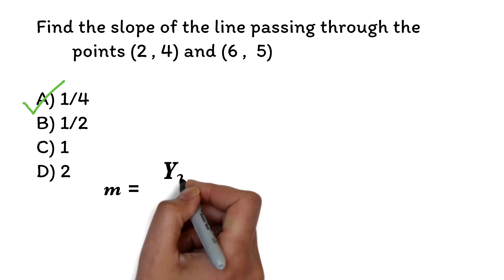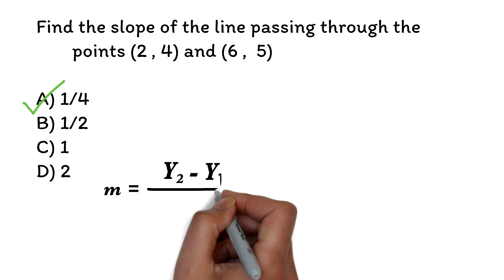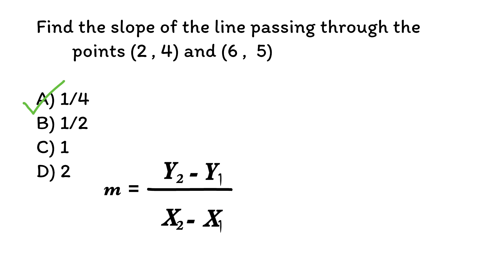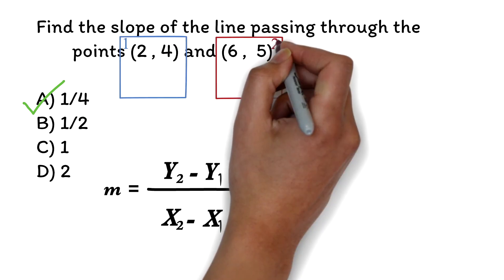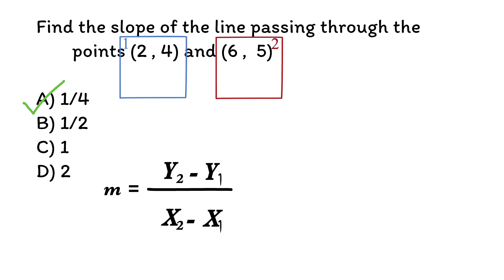m equals y2 minus y1 over x2 minus x1. Formulas are given on the GED, so don't worry too much about it. Please note that you can call any of the point 1 or 2. I'm choosing this as 1 and this as 2. We know that when you have a point, the first value is your x and the second value is your y. Since we are calling this point 1, we will have x1, y1 here. Same thing for this. Since we are calling this our point 2, we can call this x2, y2. We just put the values into the formula.